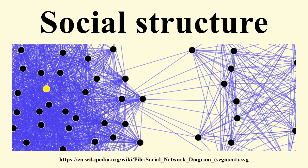On the macro scale, social structure is the system of socio-economic stratification, social institutions, or other patterned relations between large social groups.